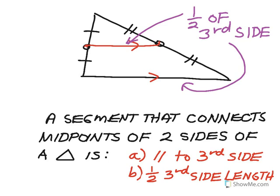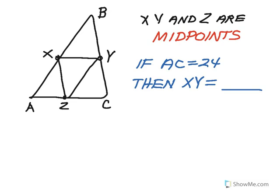We'll do some examples involving these theorems. In this first example, I have a triangle inside of a triangle, and I'm told that x, y, and z are all midpoints. So these segments are all parallel to the third side and half the length of the third sides. If ac is 24 — this whole segment at the bottom is 24 — then xy is going to be half of that, because it's parallel to the bottom and half its length.